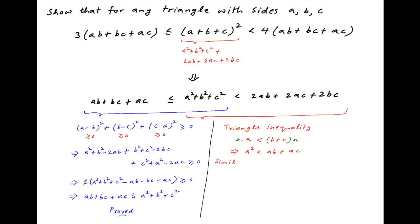Similarly, from the other two sides, the triangle inequality implies that b² < b(a + c) = ab + bc. And finally, c² < c(a + b), or equivalently c² < ac + bc.